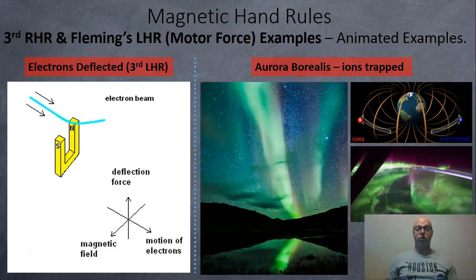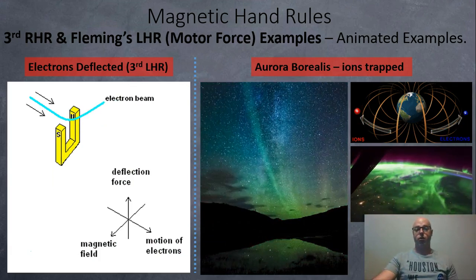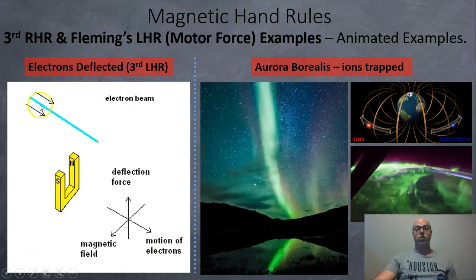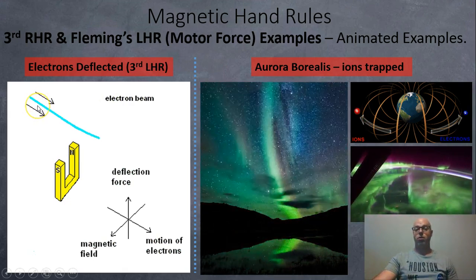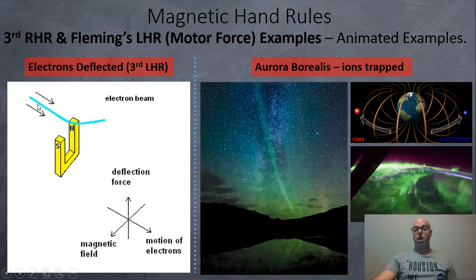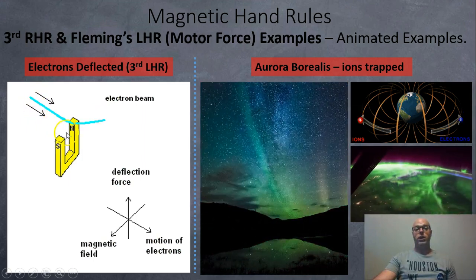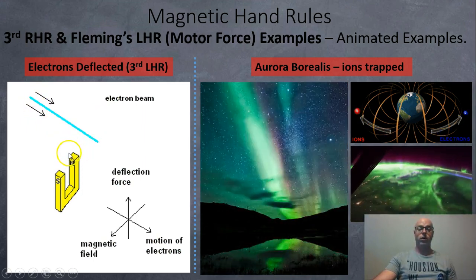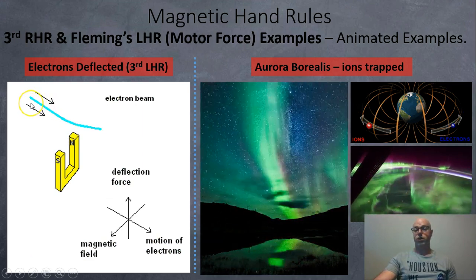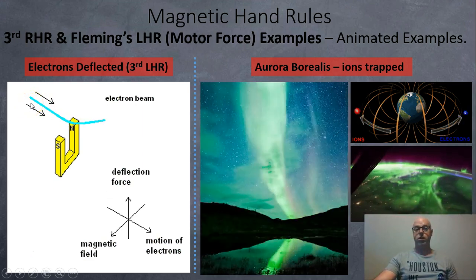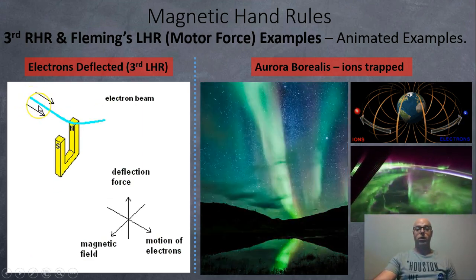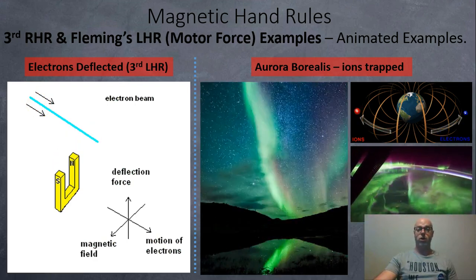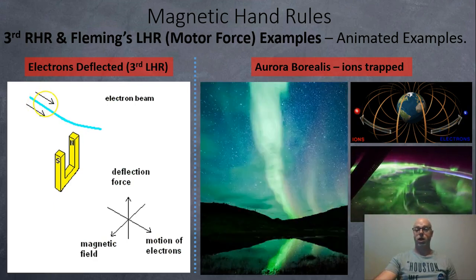Here's another example using this animation. We have a beam of electrons, known as a cathode ray or beta radiation, coming in and being deflected by the magnetic field. Old TVs used cathode ray tubes — they shoot electrons at the screen. If you put a magnet up to the screen, it wrecked the screen, but you could see the swirls as the electrons hit the screen.